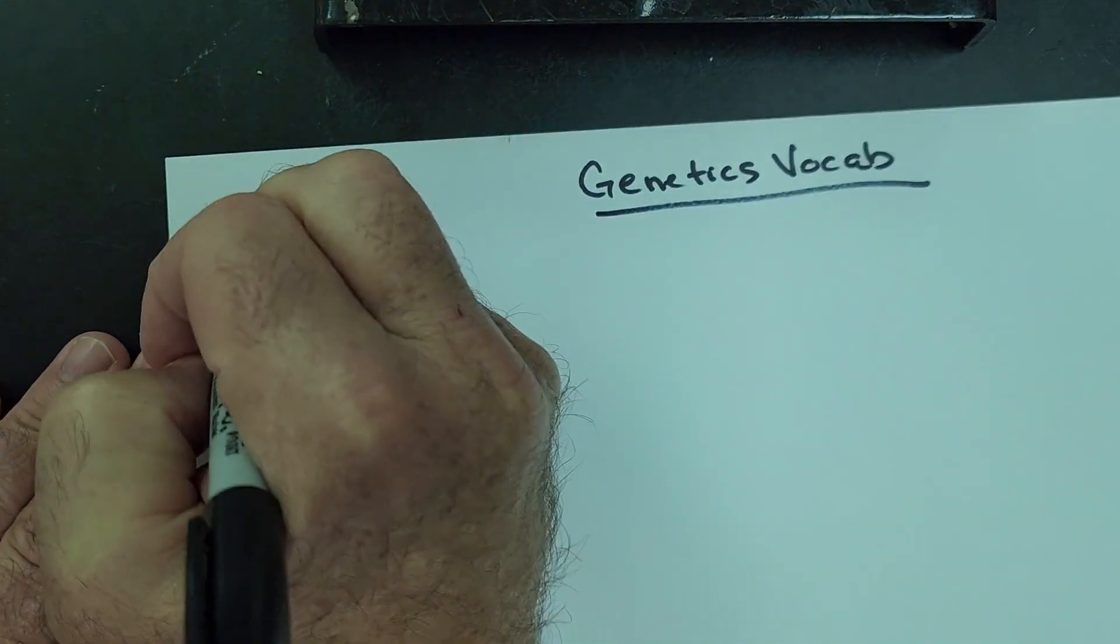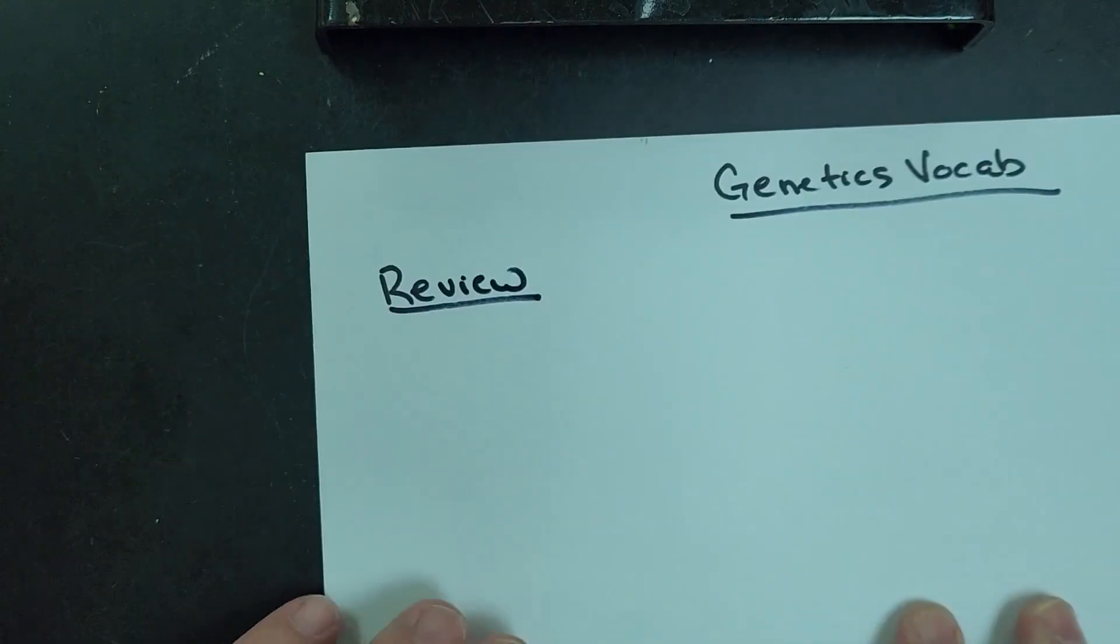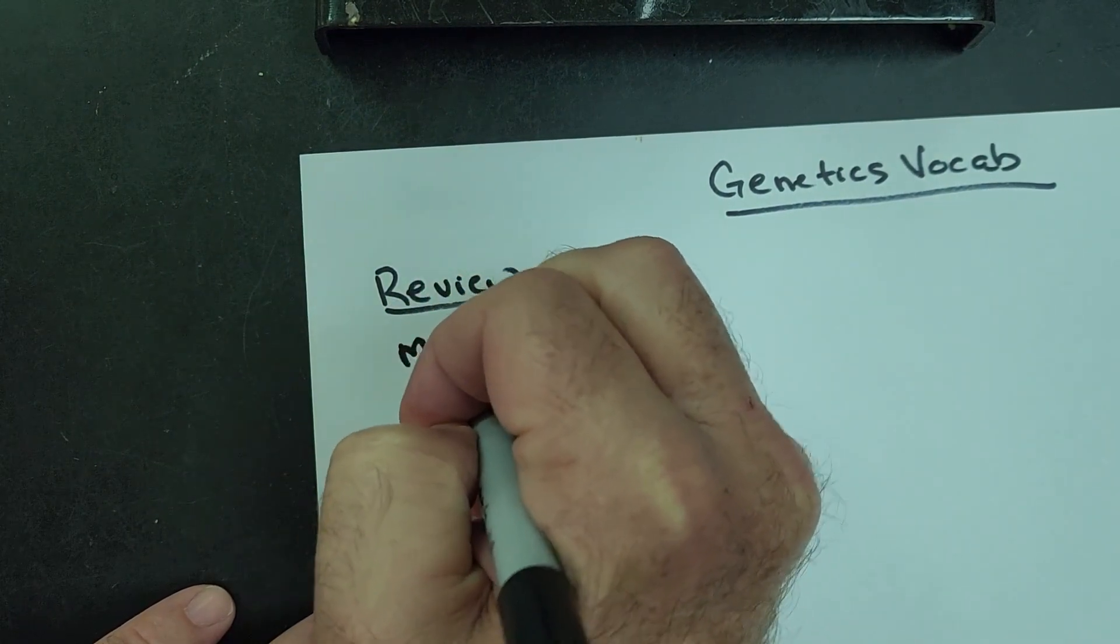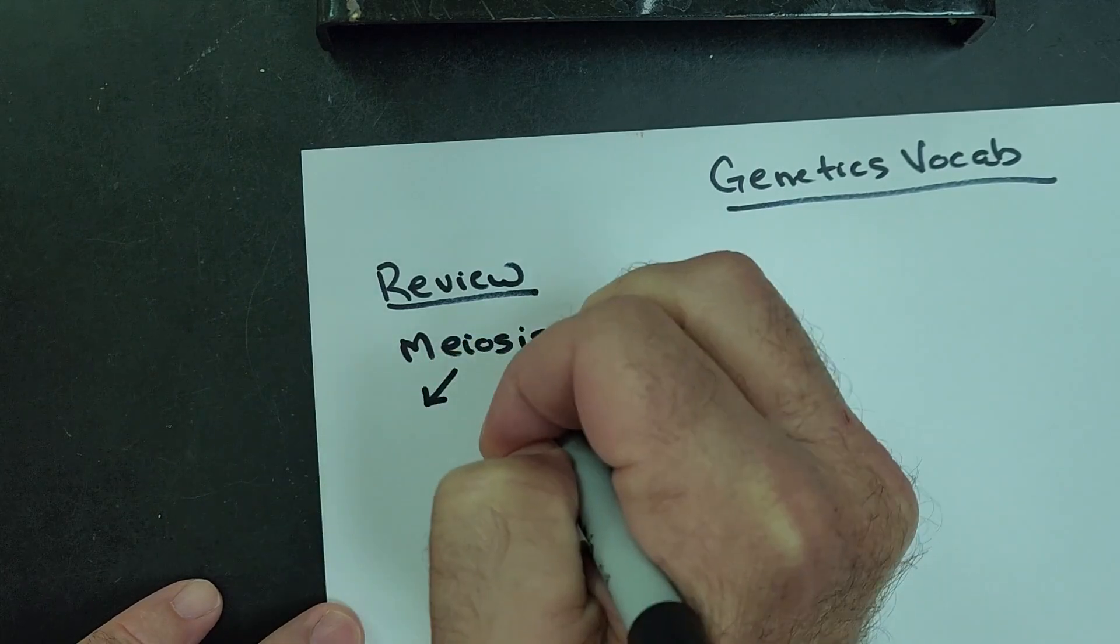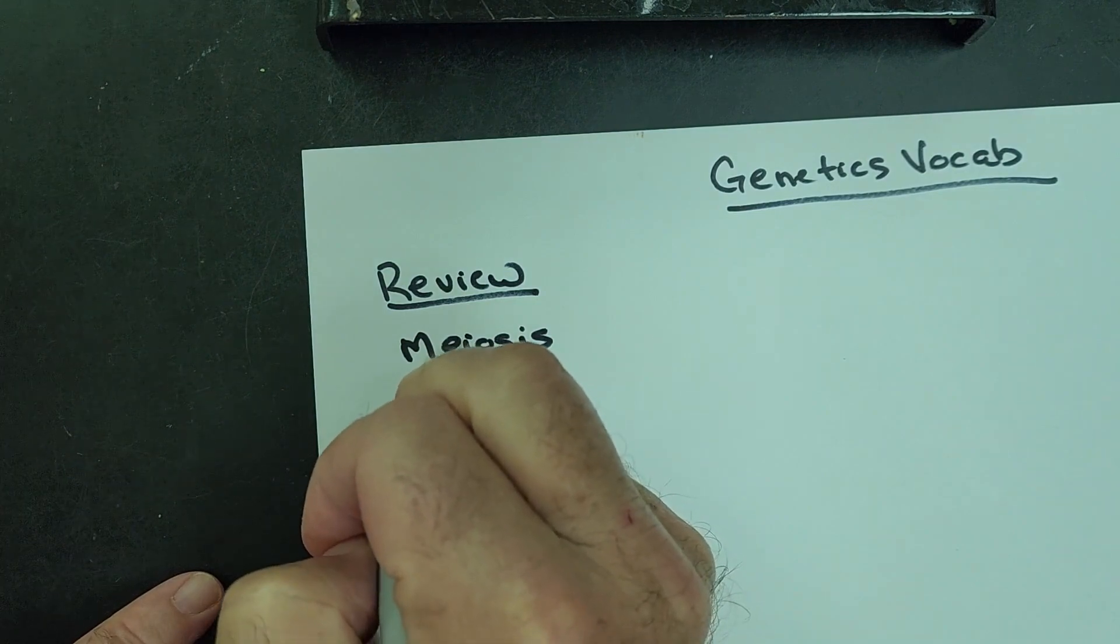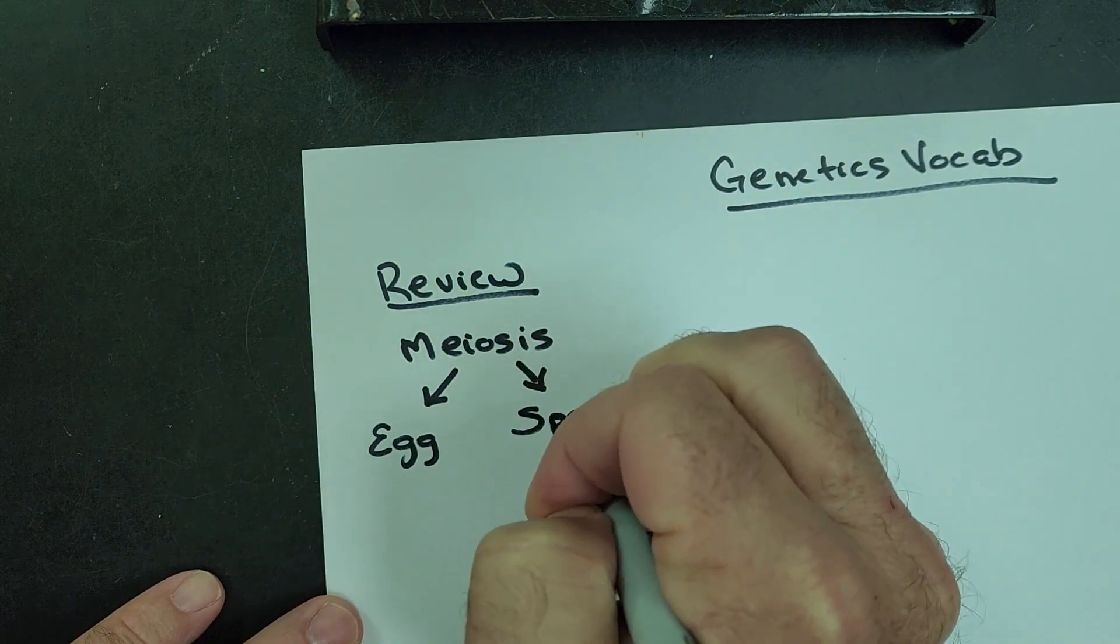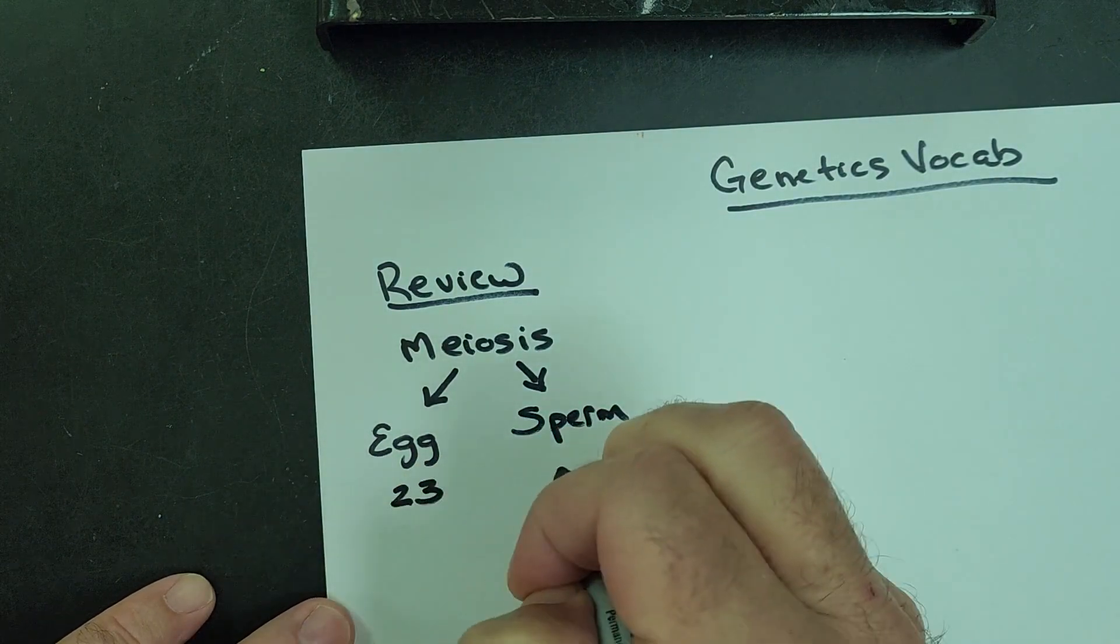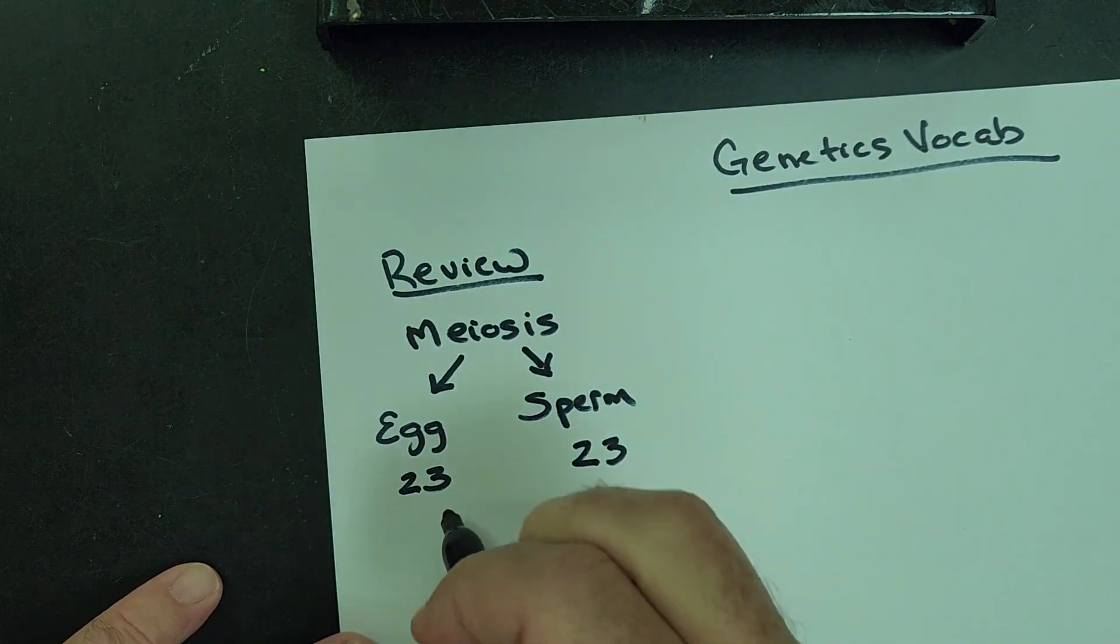To review, remember from meiosis, you're making haploid cells that have half of the normal number of chromosomes. You make an egg cell and a sperm cell. In humans, an egg cell and a sperm cell each have 23 chromosomes.